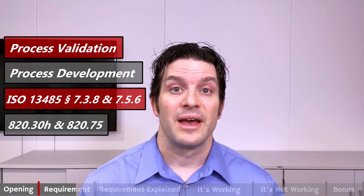Process development comes directly from two different parts of the regulation and the standard: 820.30H, design transfer, and 820.75, process validation. Within ISO 13485, that is sections 7.3.8 and 7.5.6. For more information on process development, look at the GHTF document, which we have a link for in the notes for this video description.